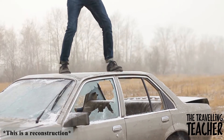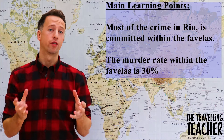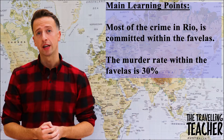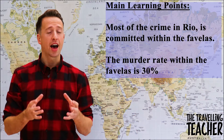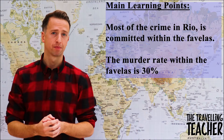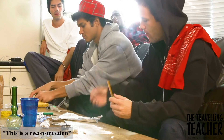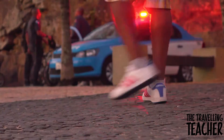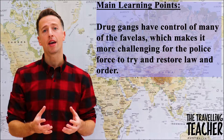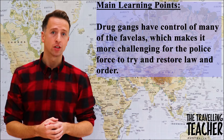The crime rate in Rio is absolutely shocking, with most of the crime being committed within the favelas. In some of the favelas across the city, the murder rate is 30%, which is an incredibly high percentage. Drug gangs have control of many of the favelas, which makes it incredibly difficult for the Brazilian police force to try and restore law and order.